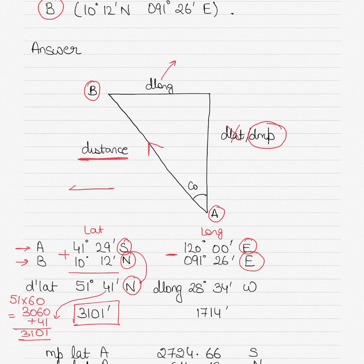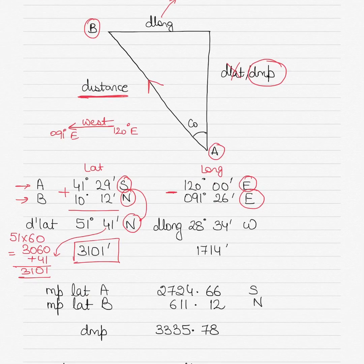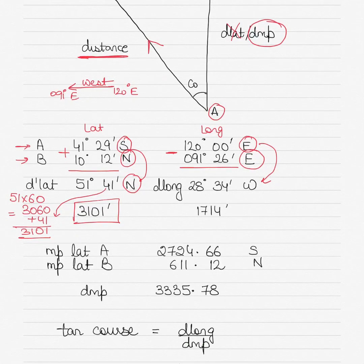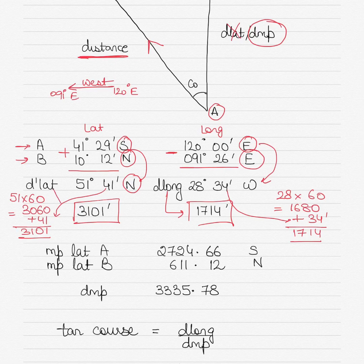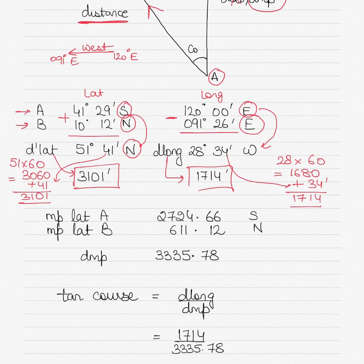So once you subtract it, you get the answer 28 degrees 34 minutes. Convert it into minutes by multiplying the degrees by 60. So 28 by 60 will give you 1680, and then add the remaining 34 minutes to it, you get 1714. That's your D long. So this is your D long, this is your D lat, of course.